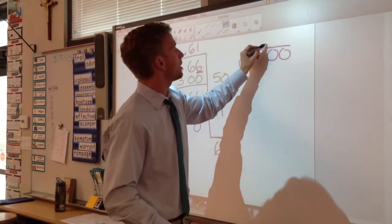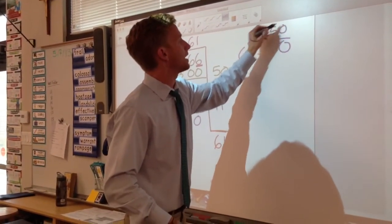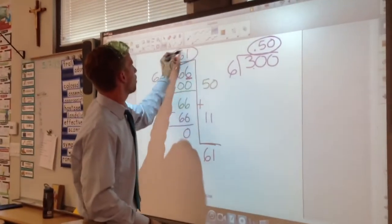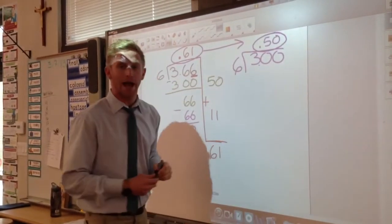We can say, well, okay, then each student might get 50 cents. That's our estimation. Is our quotient close to 50 cents? Absolutely.